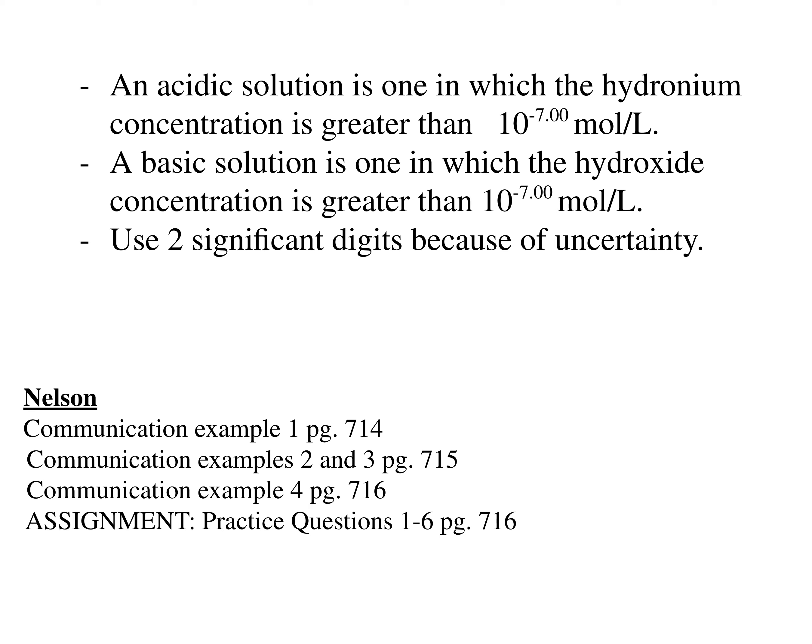pH and pOH always add together to equal 14, and hydronium ion concentration times hydroxide ion concentration always equals 1×10⁻¹⁴. So unlike grade 11, where we had to convert pH to pOH and then back to hydroxide ion concentration, now if we're given hydronium ion concentration we can do a single calculation to find the hydroxide ion concentration.